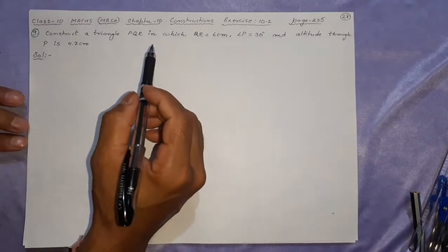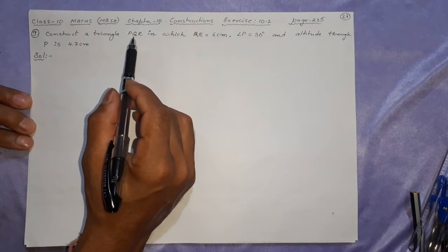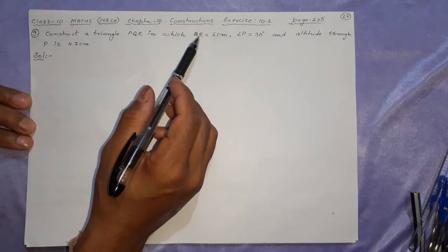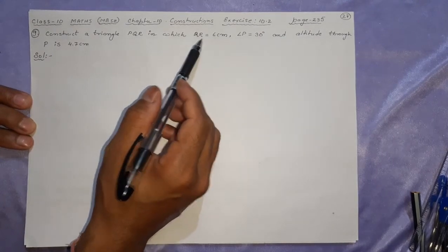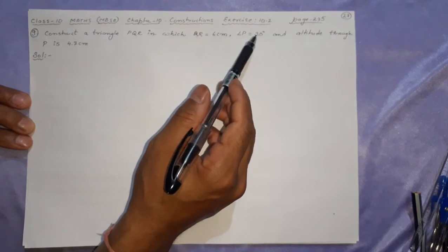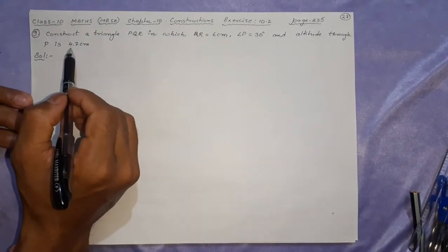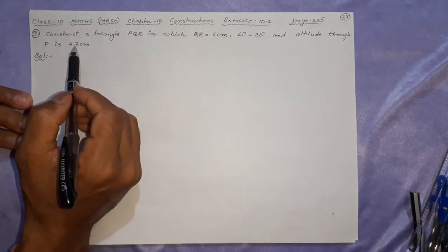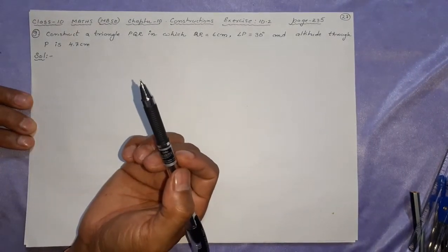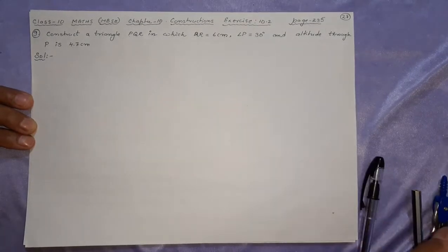Here the question is like this. Construct a triangle PQR — very little difference with the previous question. That was ABC, now this is PQR. QR is 6 centimeter, just like BC. Angle P is 30 degree, whereas earlier I had 45 degree — now it is 30 degree, which is half of 60 degree. And the altitude is slightly different: earlier it was 4.2, now it is 4.7. Rest of the things are similar; the procedure and everything will be the same.